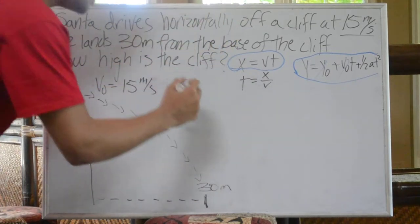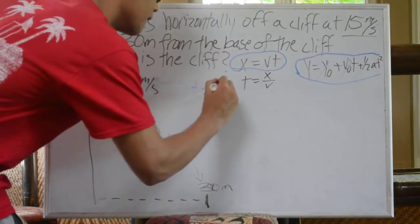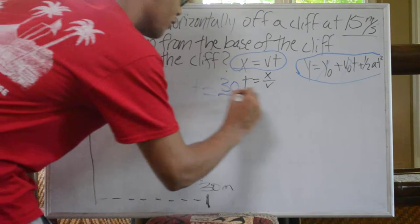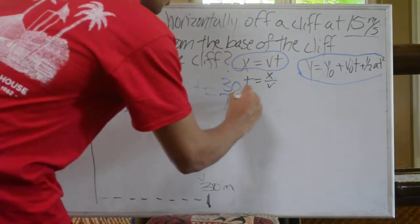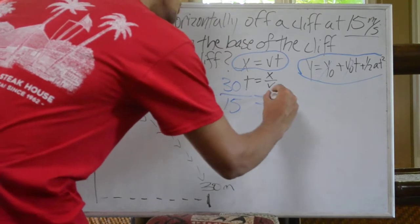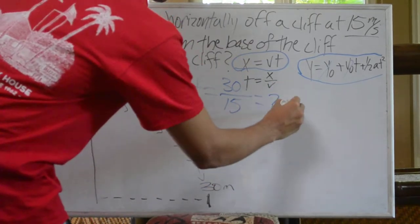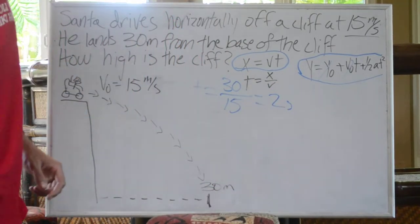x being our meters, which is 30 meters, over our v, which is 15 meters per second. 30 over 15 is 2, so our time for our x-axis is 2 seconds.